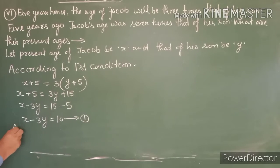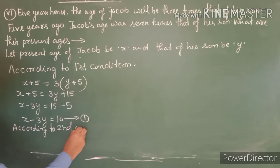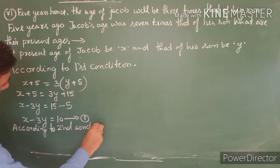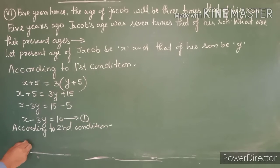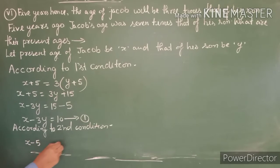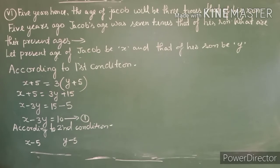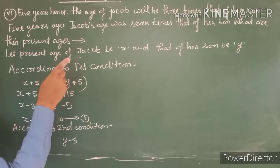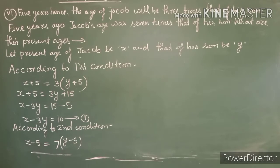According to the second condition: 5 years ago, Jacob's age will be x minus 5, and son's age will be y minus 5. The condition says Jacob's age was 7 times that of his son. So: x minus 5 equals 7 times (y minus 5).